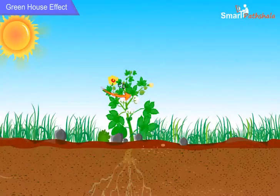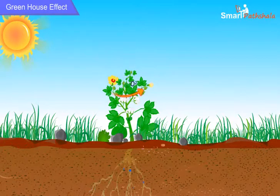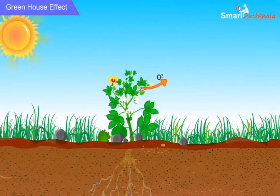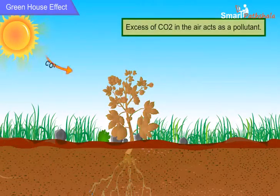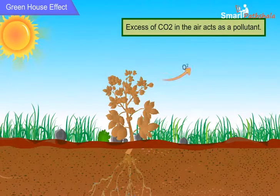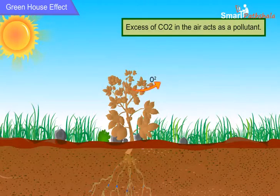Carbon dioxide is a component of air and it is essential for photosynthesis in plants. But if there is excess of carbon dioxide in the air, it acts as a pollutant.